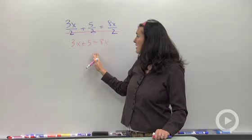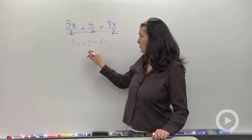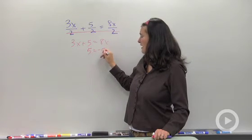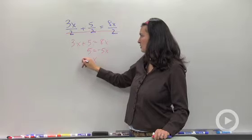And now there's no fraction, so I'm a happy camper. I would subtract 3x from both sides, and I could really easily get that x is equal to negative one.